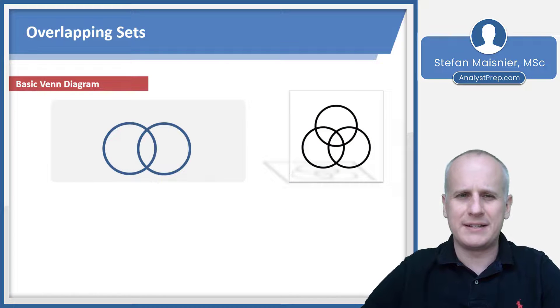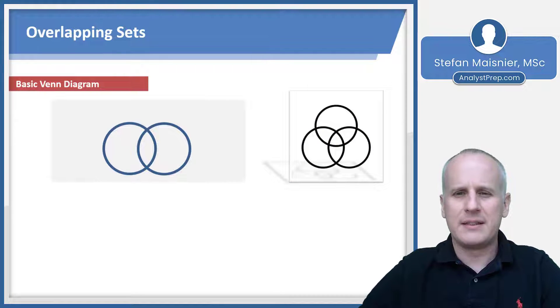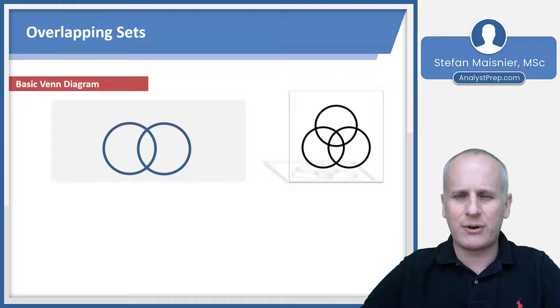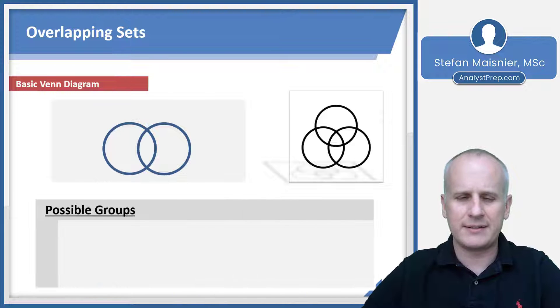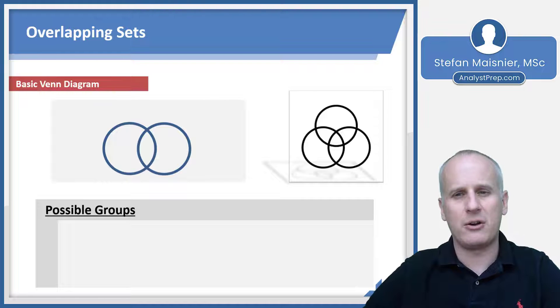So let's begin by considering overlapping sets theoretically using a Venn diagram to illustrate what's happening. You can see we've got a couple of circles and they overlap in the center as illustrated. We're going to have our possible groups and we've got to consider them holistically to understand how the overlapping sets will function.